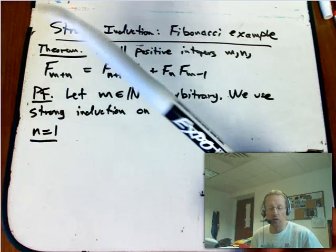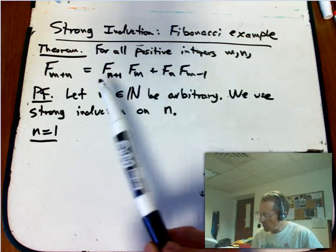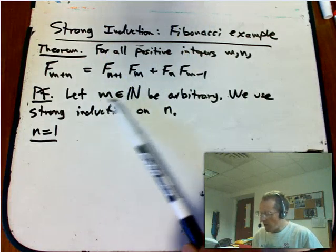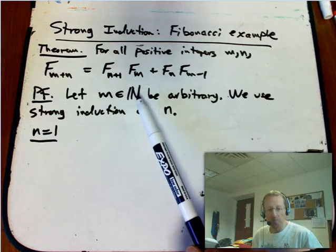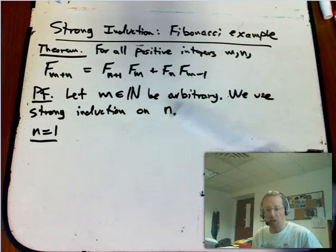You can have an induction on one integer variable inside an induction proof on the other. But we're not going to have to do that. We're going to be able to do this for any m, any positive integer m, anything in the natural numbers, that's arbitrary, and we're only going to have to do step-by-step reasoning, inductive reasoning, on n.